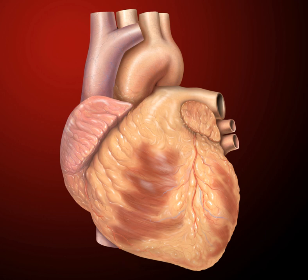Each sound consists of two components, reflecting the slight difference in time as the two valves close. S2 may split into two distinct sounds, either as a result of inspiration or different valvular or cardiac problems. Additional heart sounds may also be present and give rise to gallop rhythms. A third heart sound, S3, usually indicates an increase in ventricular blood volume. A fourth heart sound, S4, is referred to as an atrial gallop and is produced by the sound of blood being forced into a stiff ventricle.